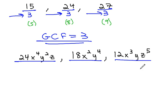Let's look at the number part first, because that might be a little more familiar to us. 24, 18, and 12 are all divisible by 6. We can divide each of those numbers by 6.